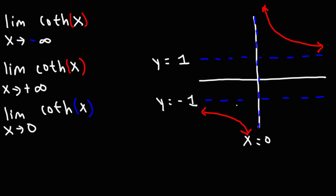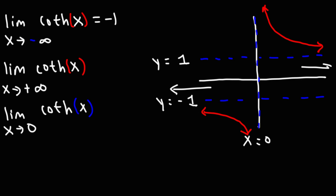As x goes to negative infinity — going all the way to the left — this curve is approaching a y-value of negative 1. For the limit as x approaches positive infinity for hyperbolic cotangent, going to the right, notice that this curve approaches a y-value of 1, so that's going to be positive 1. Now, as x approaches 0, we need to look at the left and right-sided limits.